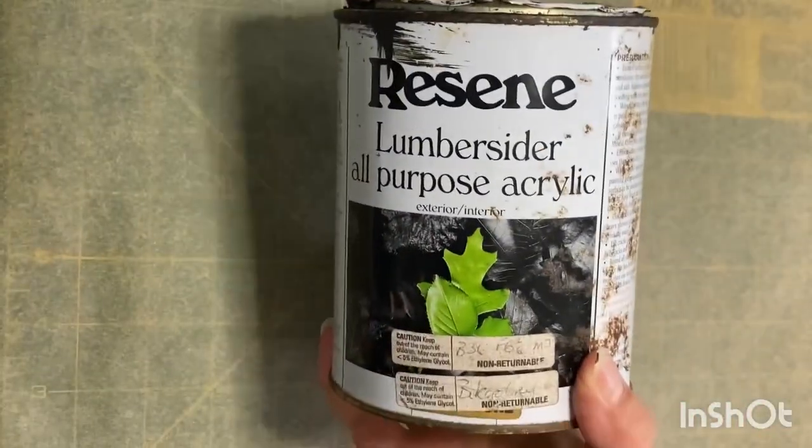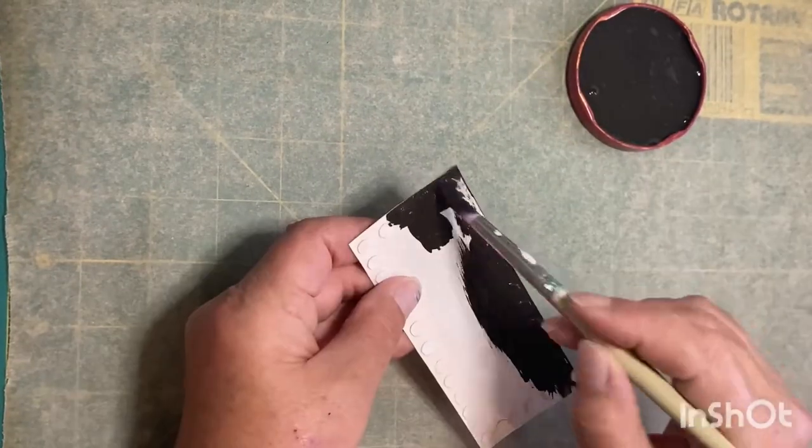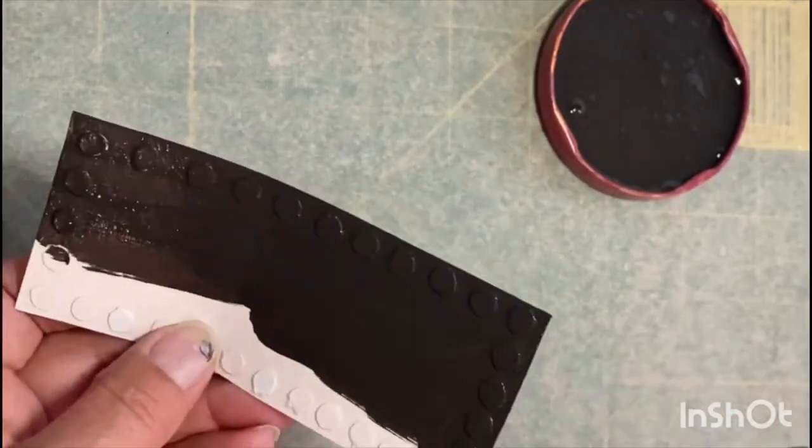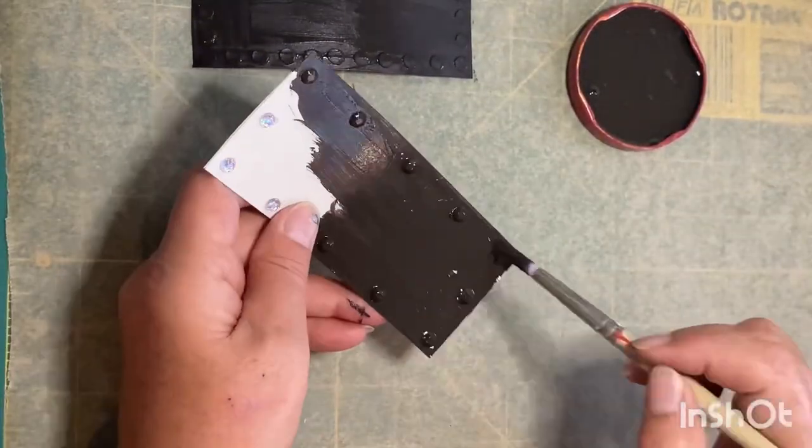For the base coat, I'm going to be using some baking paper and an all-purpose exterior acrylic black paint. This has got quite a brown tone to it, and you'll start to see how those different rivet methods start to take effect.